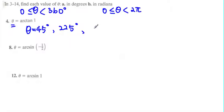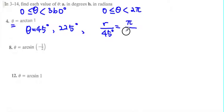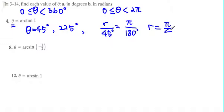Now converting these into radian measures: 45 degrees converts using the ratio r over 45 degrees equals pi over 180 degrees. Cross-multiplying and solving, theta equals pi over 4. Going through the same procedure with 225 degrees, you end up getting 5 pi over 4.